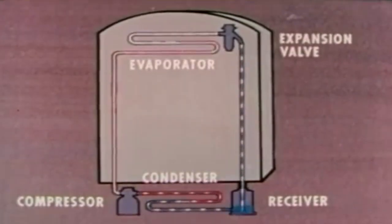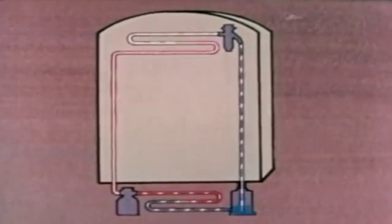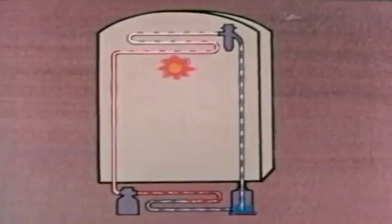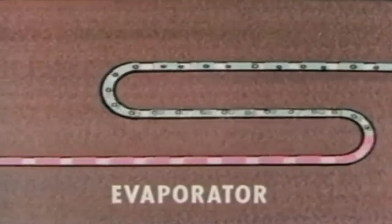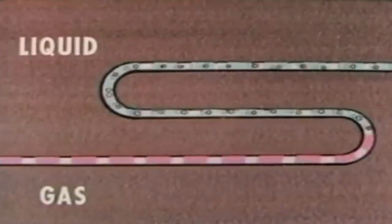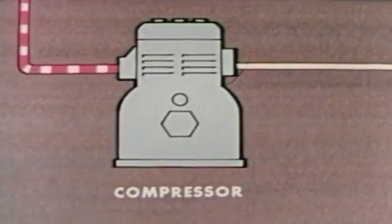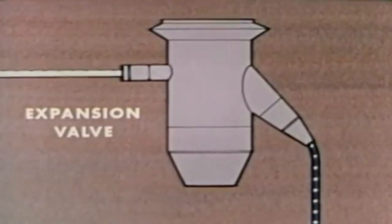A chemical substance called the refrigerant flows through the system. It's the refrigerant that picks up BTUs of heat from inside the box and discards them outside. In the process, the refrigerant changes from a liquid to a gas. Then in the condenser it changes back to a liquid. At the same time, the pressure increases in the compressor and decreases in the expansion valve.